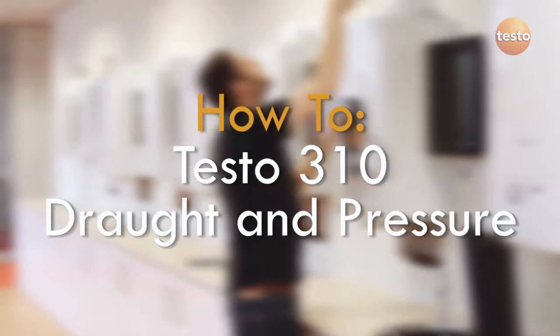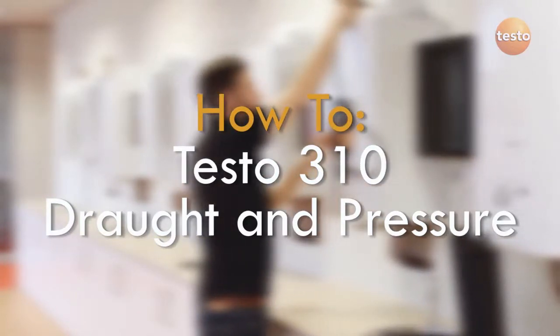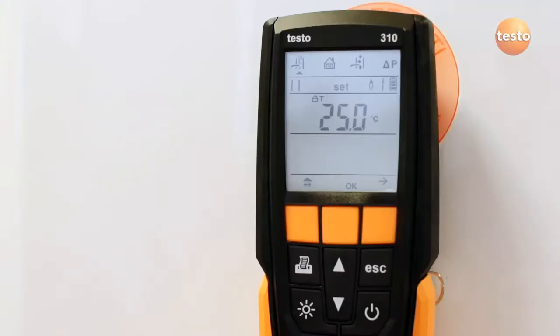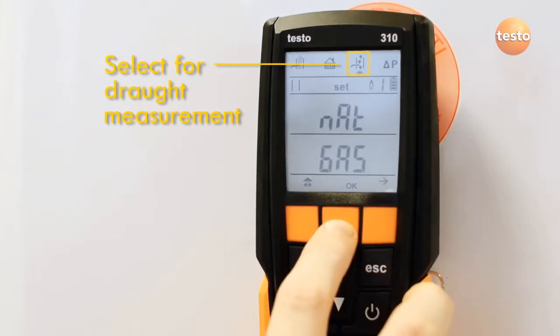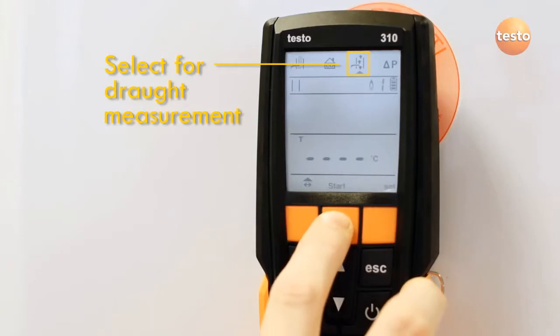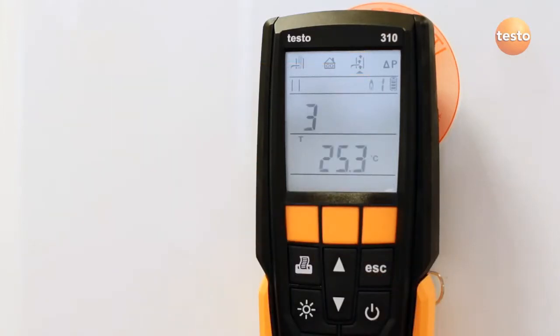The 310 has built-in pressure sensors which mean the analyzer can be used to check the flue draft or to measure gas pressure. To measure draft, select the test on the screen and then with the probe in fresh air, press start. The pressure sensors adjust to the barometric pressure for five seconds. It's important that the probe is in fresh air while the pressure sensors are zeroed.